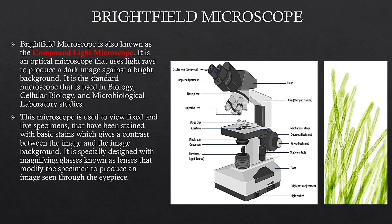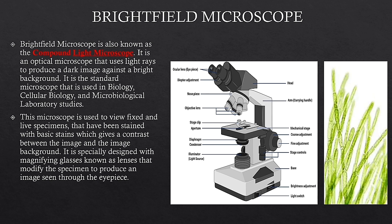So let's start the topic. The bright field microscope is also known as the compound light microscope. It is an optical microscope that uses light rays to produce a dark image against a bright background. It is the standard microscope used in biology, cellular biology, and microbiological laboratory studies. This microscope is used to view fixed and live specimens that have been stained with a basic stain, which gives contrast between the image and the image background.